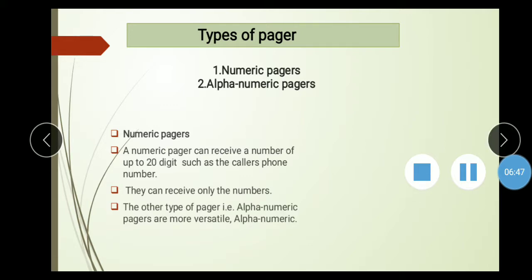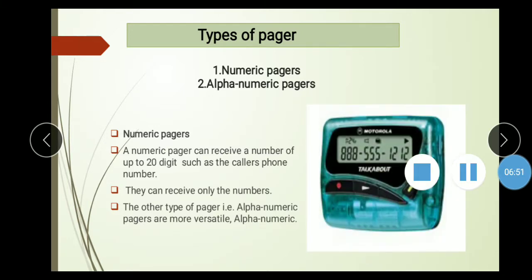And other types are alphanumerical pagers. We will see it later. First, we are looking at our numerical pagers. See here, only there are numbers. We send it. It is just our numbers. And we will also have 20 digits maximum. We cannot send more.